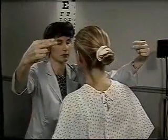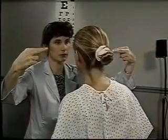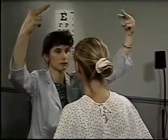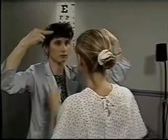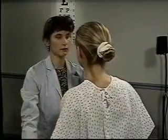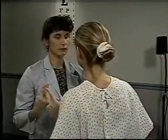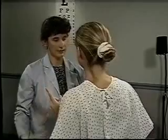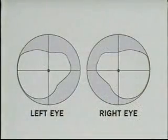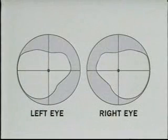move your wiggling fingers along the imaginary bowl until the patient points to them. Repeat these movements in the upper and lower temporal quadrants. Normally, a patient sees both sets of fingers at the same time. If so, the visual fields are usually normal. Note that the eyebrows normally limit the visual fields in the upper temporal quadrants compared to the lower temporal quadrants.